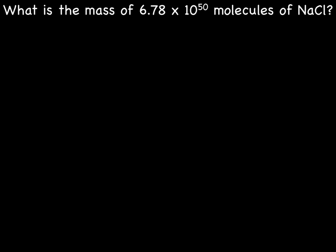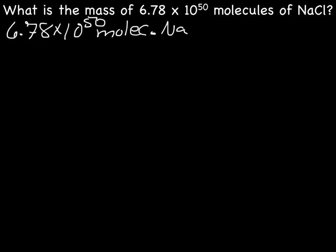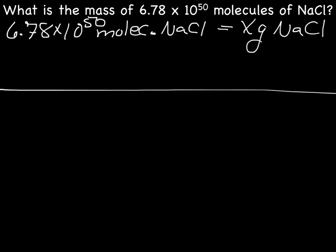We start by going through our normal steps. We read the question, which is: what is the mass of 6.78 times 10 to the 50th molecules of NaCl? Step 1, let's write this as a math problem: 6.78 times 10 to the 50th molecules of NaCl equals X grams NaCl. Next, we set up the grid and write our known: 6.78 times 10 to the 50th molecules NaCl over 1.